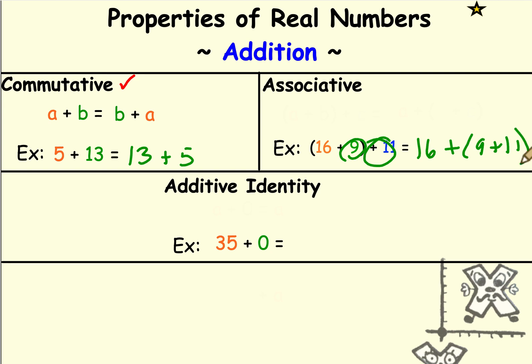So if I was to add it like this instead, 9 plus 11 first to give me 20, well 20 plus 16 is easier. It's 36. And let's see if I would have gotten that had I done it the other way. 16 plus 9 is 25 and 25 plus 11 is 36. So either way, I still would have gotten exactly 36. But by changing the grouping, I ended up with something that was easier to do in my head.